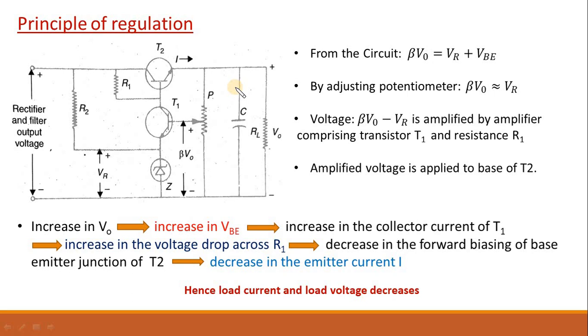Similar thing will happen if there is a decrease in output voltage V₀, it will decrease VBE, which will decrease the collector current, in turn decrease the voltage drop across R1, which will increase the forward bias of the base emitter junction and increase the emitter current. Then, it will increase the overall voltage. So, that's how the output voltage always remains constant irrespective of there is change in input voltage or there is change in current.